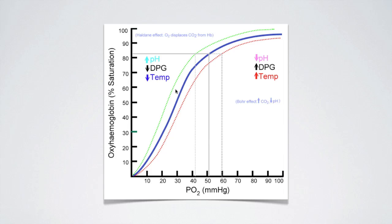So this is the oxygen dissociation curve showing that as you pick up oxygen, it makes it easier for more oxygen to be picked up — it starts slow, then goes faster and faster. And as you release oxygen, it makes it easier for more oxygen to leave, and that also goes down faster and faster. This is called the oxygen dissociation curve.